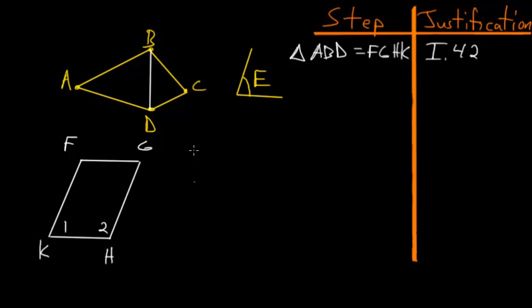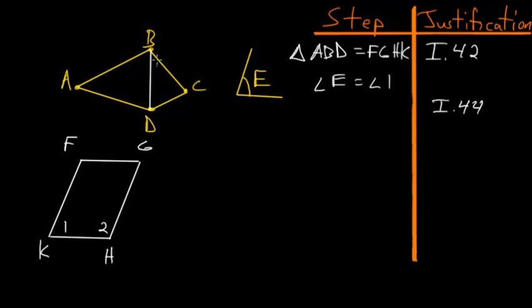Triangle ABD will be equal to parallelogram FGHK, so we construct that here. Now that the parallelogram is constructed, angle E is equal to angle 1, so angle E equals angle 1.